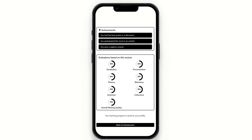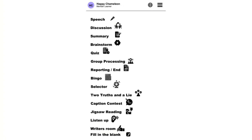I didn't show all the activities to keep this demo from being too long. The full activity list includes: Speech, Discussion, Summary, Brainstorm, Trivia, Group Processing, Reporting, Bingo, a Selector that randomly chooses users within some activities, Two Truths and a Lie, Caption Contest, Jigsaw Reading, Listen Up, Writer's Room, and Fill in the Blank.